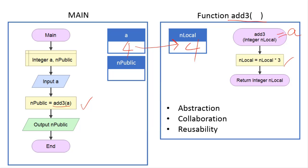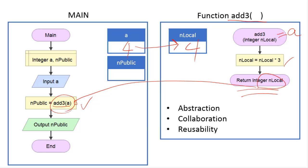The result is 12. Once that happens, the returning value nlocal is going to be set back to the caller — add3 sending the value a is going to have a returning value of 12. Nlocal is going to be returned to add3(a), which is then assigned to npublic. And then we print it out. So pretty much what we have is number 12 printed out.